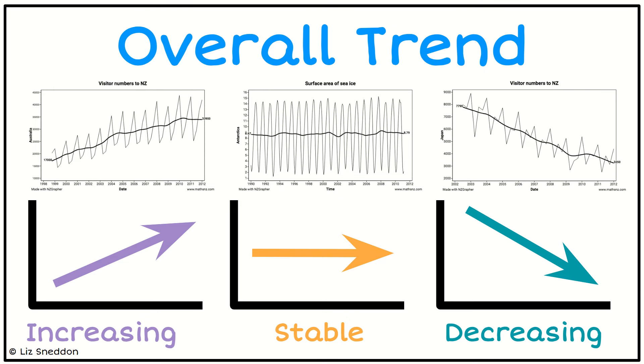So the trend pattern can be one of these three main types. And we look at the overall pattern. So we can look at whether it's increasing, going upwards, whether it's stable, or whether it's decreasing and going downwards. So that's the main patterns we want to identify.